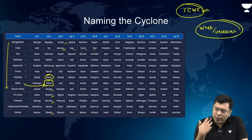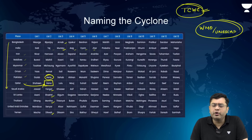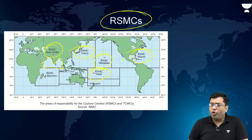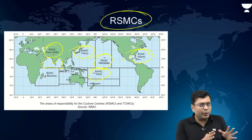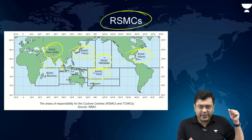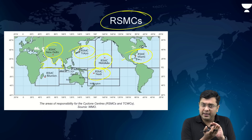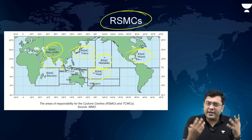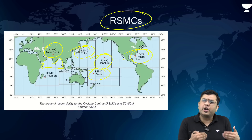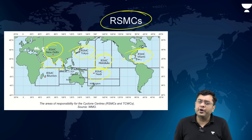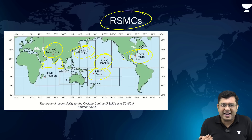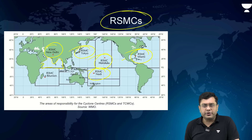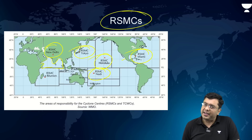Cyclone Dana is impacting Odisha and West Bengal. To summarize this video: Cyclone Dana is a tropical cyclone that developed due to low pressure over the Bay of Bengal. Its direction of movement is east to west, powered by latent heat of condensation from moist air dragged over the Bay of Bengal. We covered the process of heating and condensation, the concept of landfall, the expected movement, the regions impacted, the weather pattern, and the naming of cyclones.